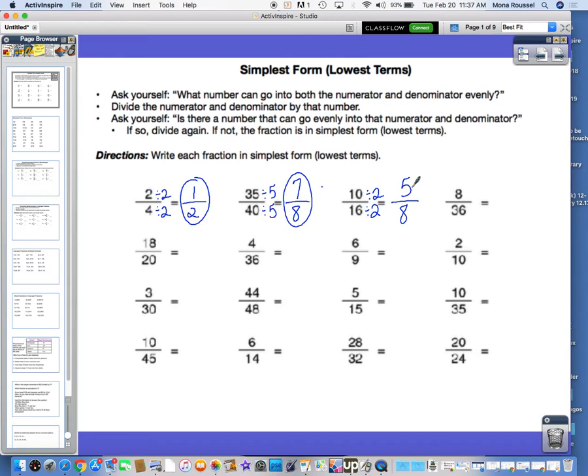And then we see if there's any number that can go into both 5 and 8 evenly. Mr. Muntz, please call the office. Mr. Muntz, please call the office. There's no number that can go into both 5 and 8 evenly, so we circle it, and that's our simplest form answer.